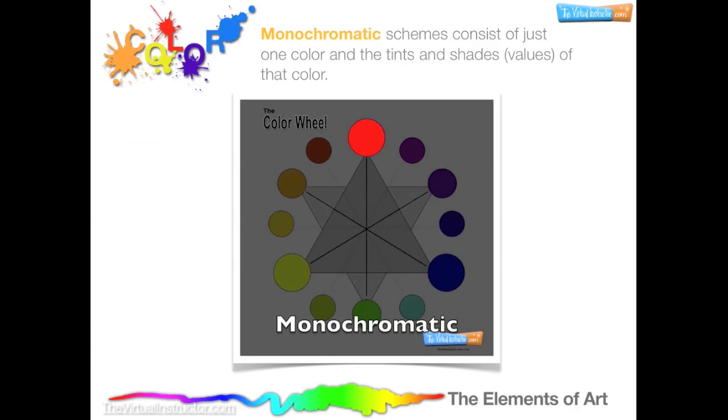The first scheme we'll take a look at is monochromatic. Monochromatic schemes consist of just one color and the tints and shades or values of that color. Mono literally means one, and chroma refers to color. Monochromatic literally means one color.